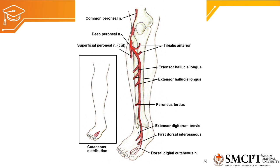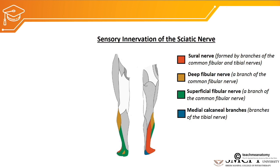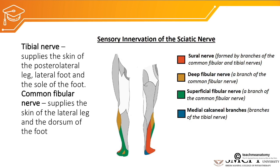Now let us view the sensory innervation of the sciatic nerve. The tibial nerve supplies the skin of the posterior lateral aspect of the leg, lateral foot, and sole of the foot. The common fibular nerve supplies the skin of the lateral leg and the dorsum of the foot. The picture shows cutaneous branches of the common peroneal and tibial nerves supplying the posterior lateral aspect of the foot, lateral leg, dorsum, and sole of the foot.